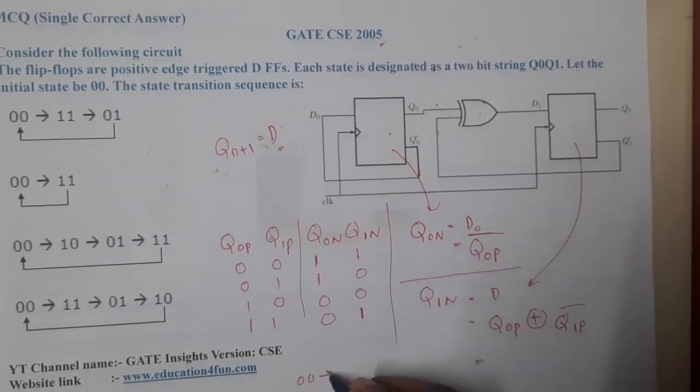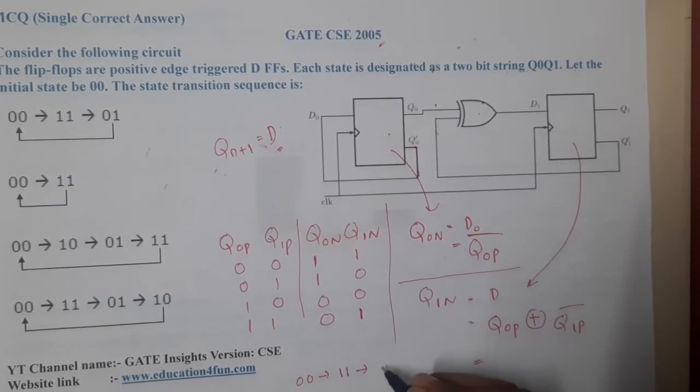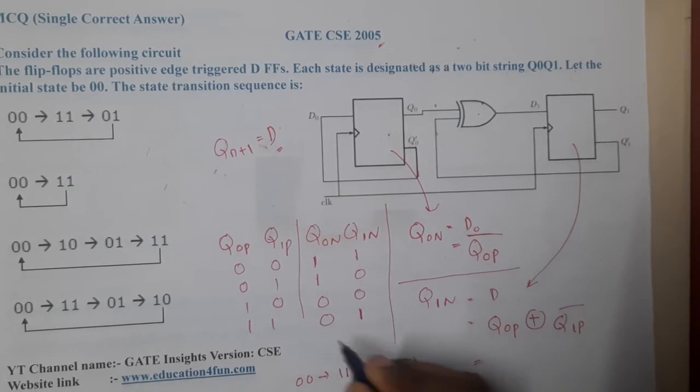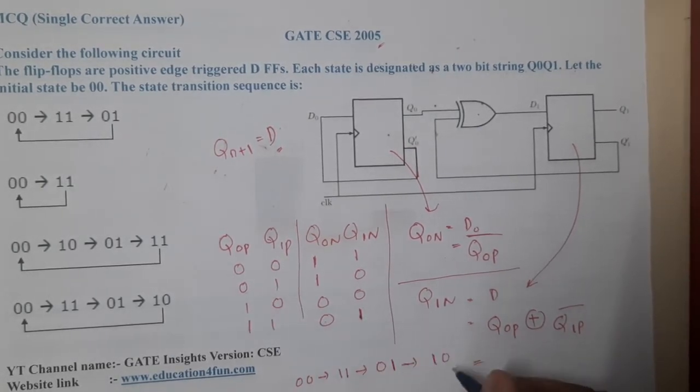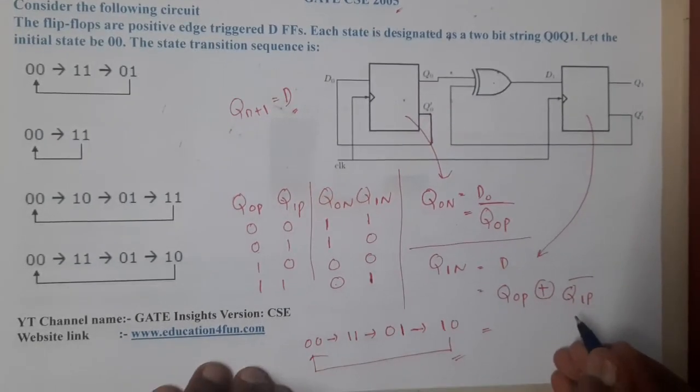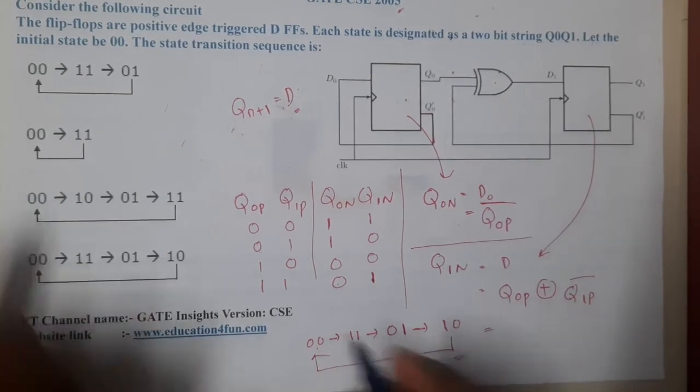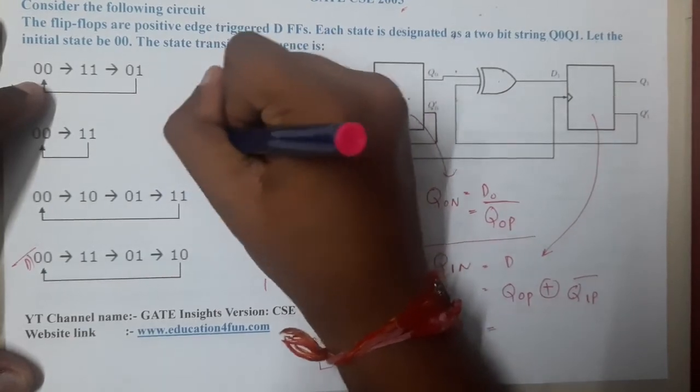If we start at 00, we will move to 11. From 11, we will go to 01. From 01, we go to 10. From 10, we come back to here. Is there any option with this particular format, guys? I think this option is matching: 00, 11, 01, 10. Yes, option D is the correct answer. Got it? Yes, this is quite a direct question.